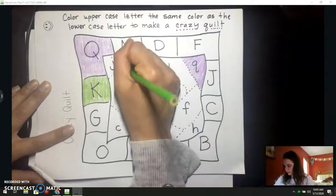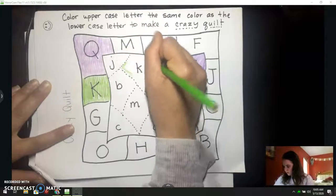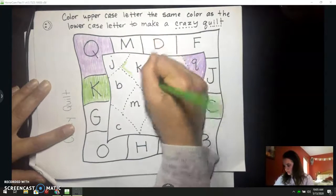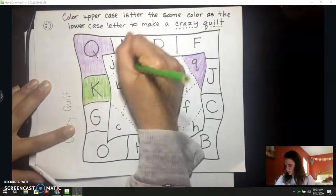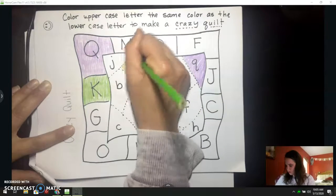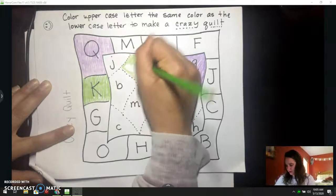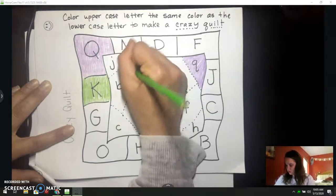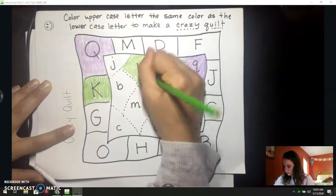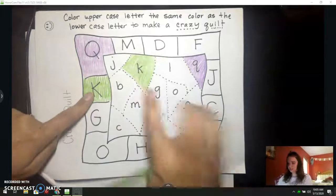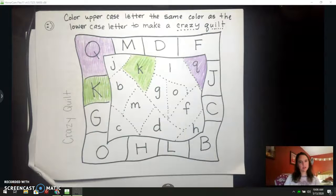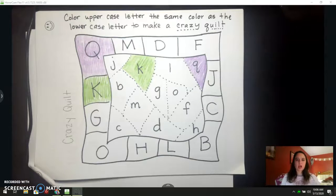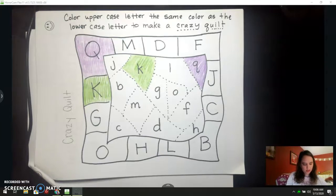I might switch to crayons. I think maybe my hands get less tired with crayons than they do with colored pencils. You can use whatever you want to use - crayons, colored pencils, markers. Alright, do you see how I have an uppercase K and a lowercase K? And they're the same color. It's kind of hard to see because of the light on my camera. I am going to do one more with you. And then I'm going to pause the video and let you do the rest on your own.